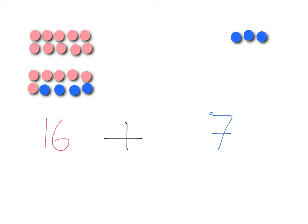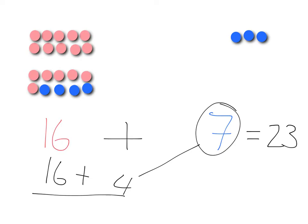And so what do I have? I've got 10, 20, 23, right? So I know my answer is 23. What have I done? I've taken the 16 and I've taken from that 7, I've taken 4 to make up the 20. And if I take 4 out of the 7, I know I've got 3 left. And so I'll have 20 plus 3, which is 23.